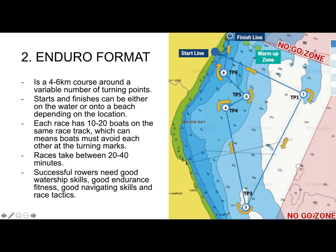The endurance format is normally between four and six kilometres around a variable number of turning points. The starts and finishes can either be on the water or on the beach, depending on the location. Each race has between 10 and 20 boats on the same racetrack, so there's a lot of trying to avoid each other as we turn around the marks. Races take between 20 and 40 minutes. Successful rowers need good watership skills, good endurance fitness, and strong navigation skills and race tactics.